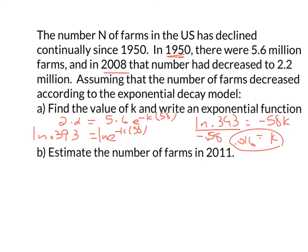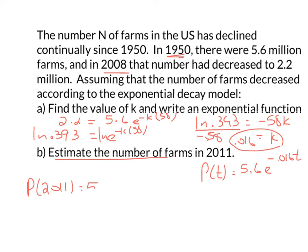So my k is 0.016, and my function is P(t) equals 5.6 times e to the negative 0.016·t. Now part b says to estimate the number of farms in 2011. I need to figure out how many years from 1950 to 2011 — that's 61 years — so I plug in t equals 61, not 2011.